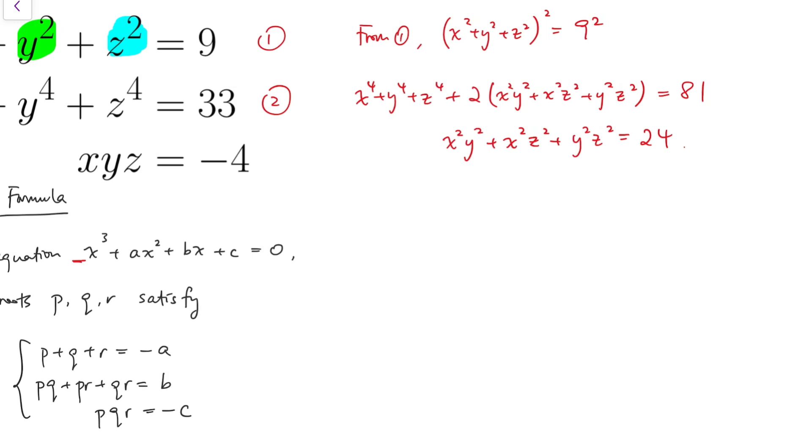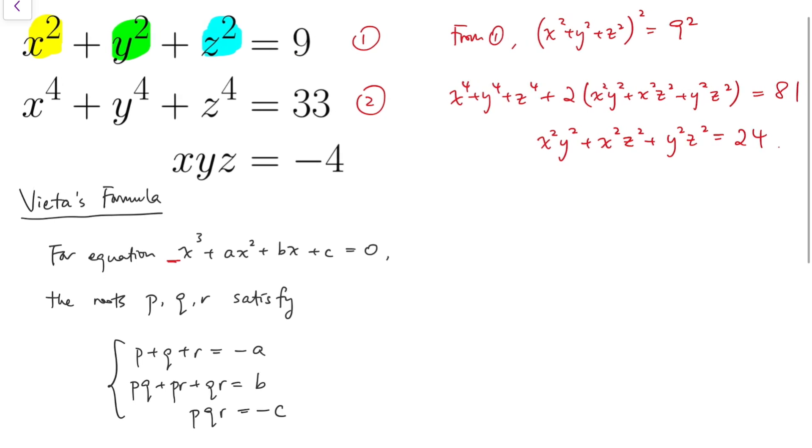Now we have two parts of the three conditions that P, Q, R can satisfy. And finally, we can find the product of x squared, y squared, and z squared from the third equation.